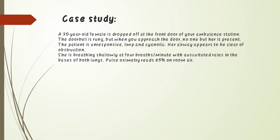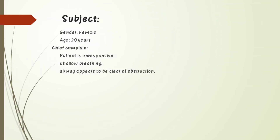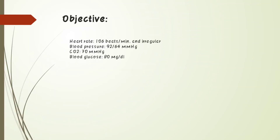Pulse oxygen saturation is approximately 65%. The chief complaint is that the patient is unresponsive with shallow breathing and airways appear clear of obstructions. Heart rate is 106 beats per minute and irregular. Blood pressure is 92/64 mmHg and blood glucose level is 80 mg/dL.